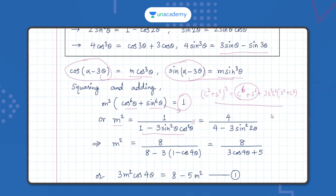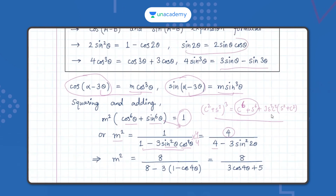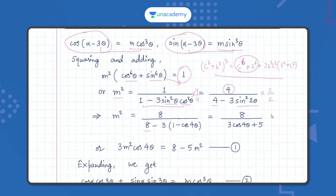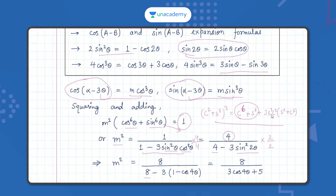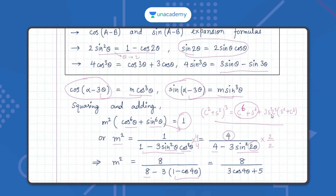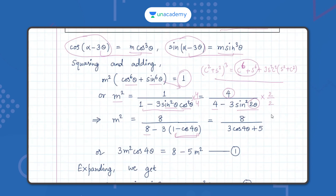We then multiply and divide by 4: m² = 4 / (4 - 3·4sin²θ·cos²θ). Since 4sin²θ·cos²θ = sin²2θ, this becomes m² = 4 / (4 - 3sin²2θ). We then multiply and divide by 2: 2sin²2θ = 1 - cos4θ, replacing x with 2θ in the formula 2sin²x = 1 - cos2x, giving us m² = 8 / (8 - 3(1 - cos4θ)).